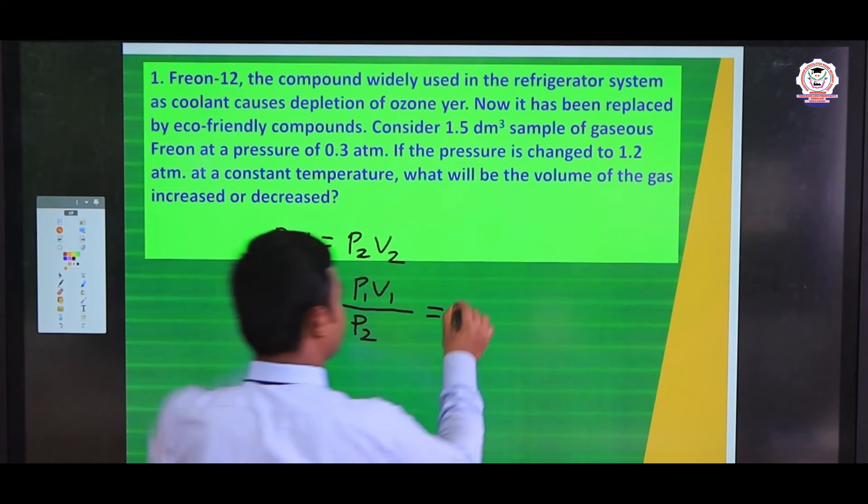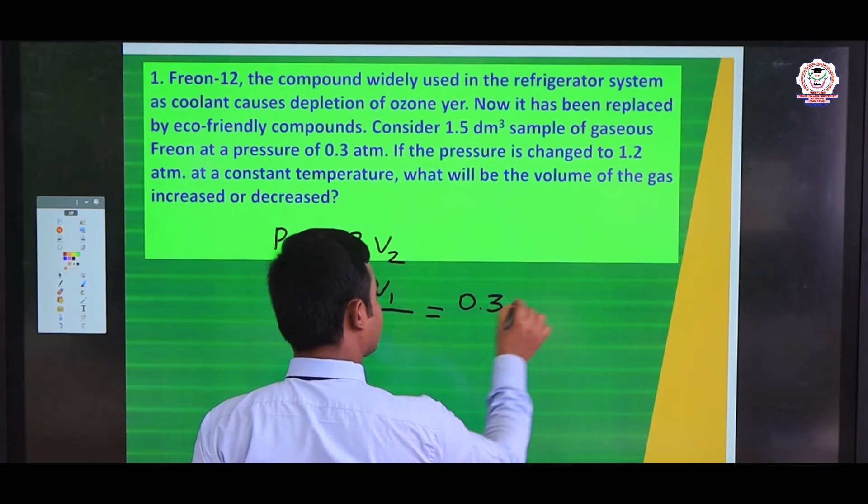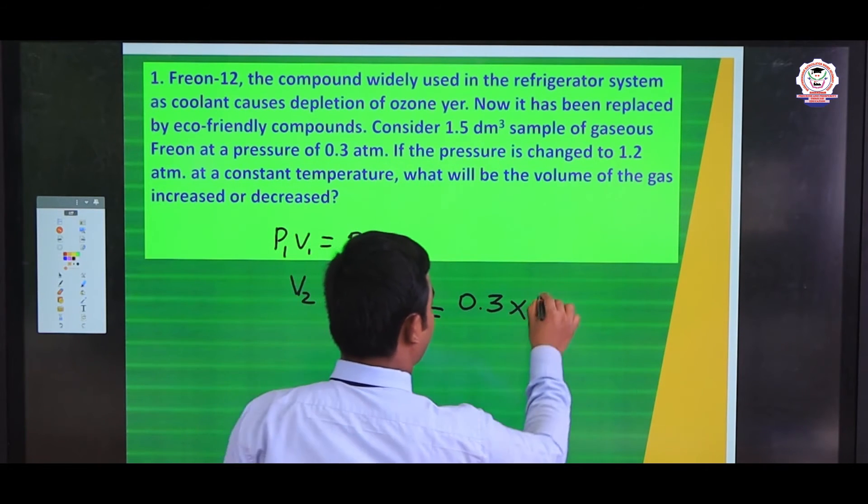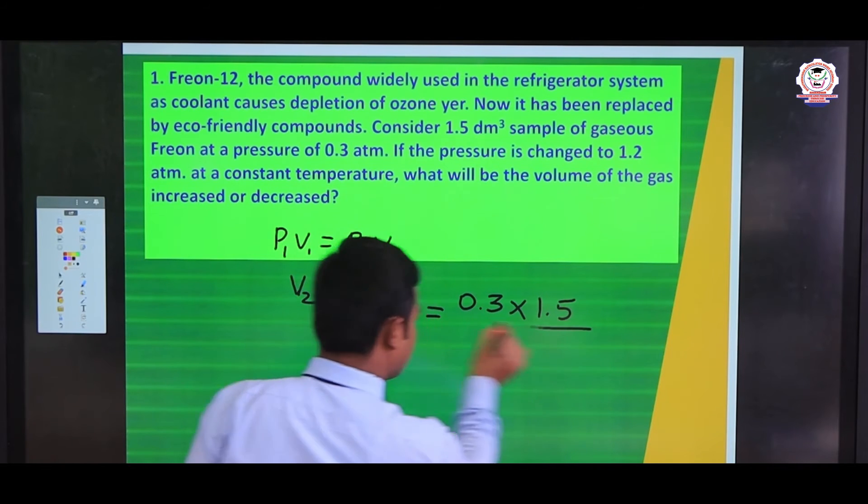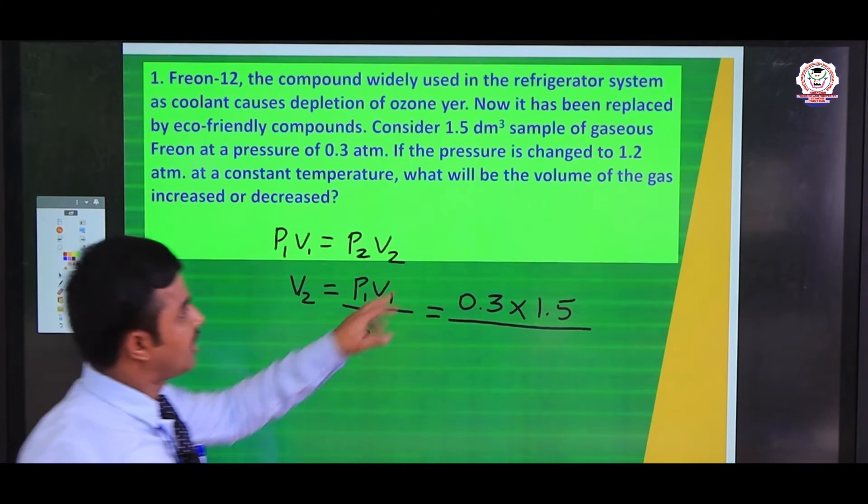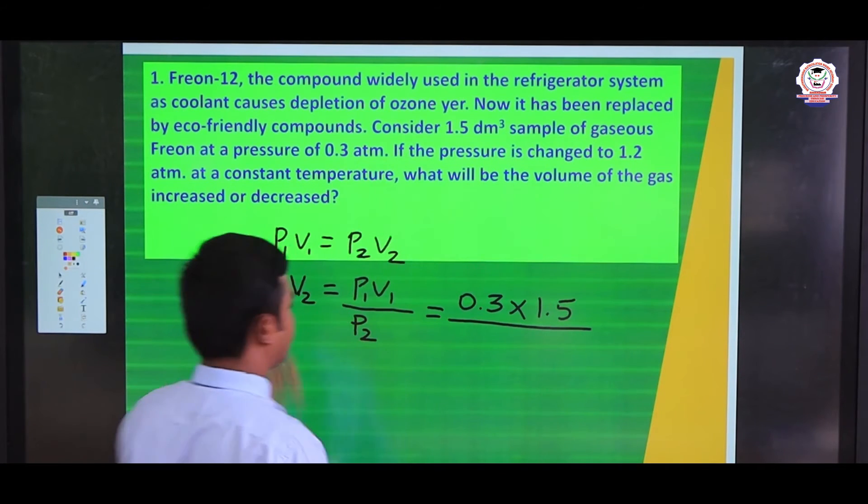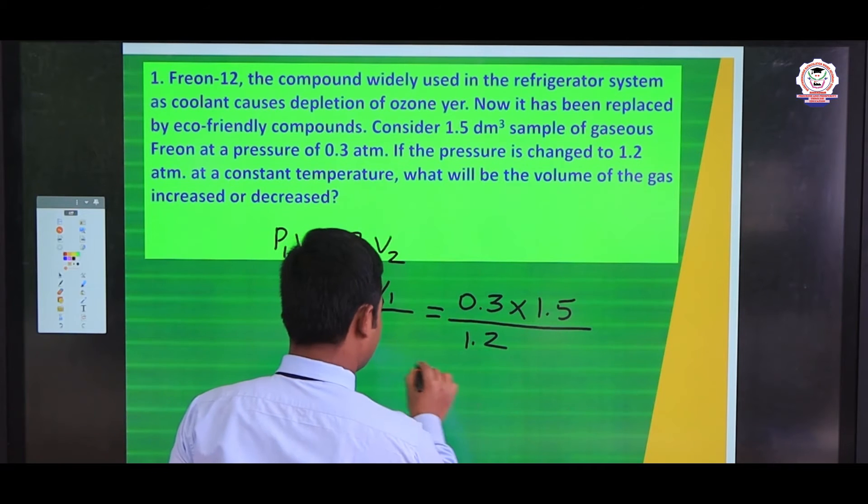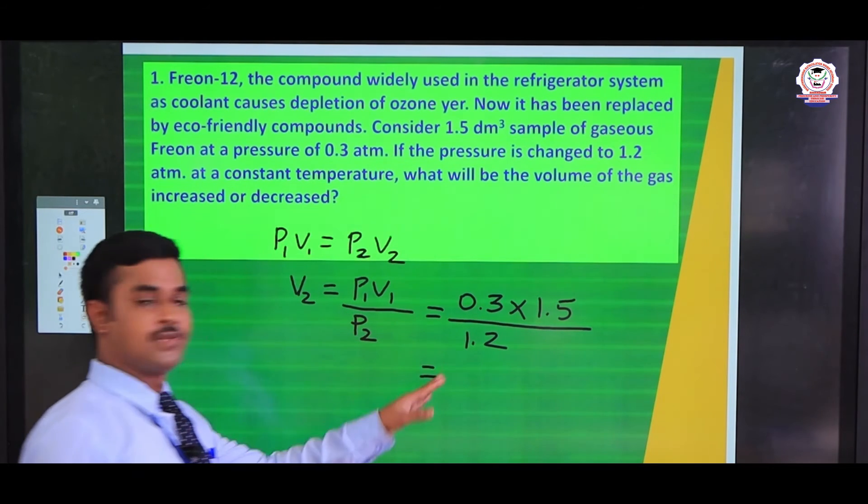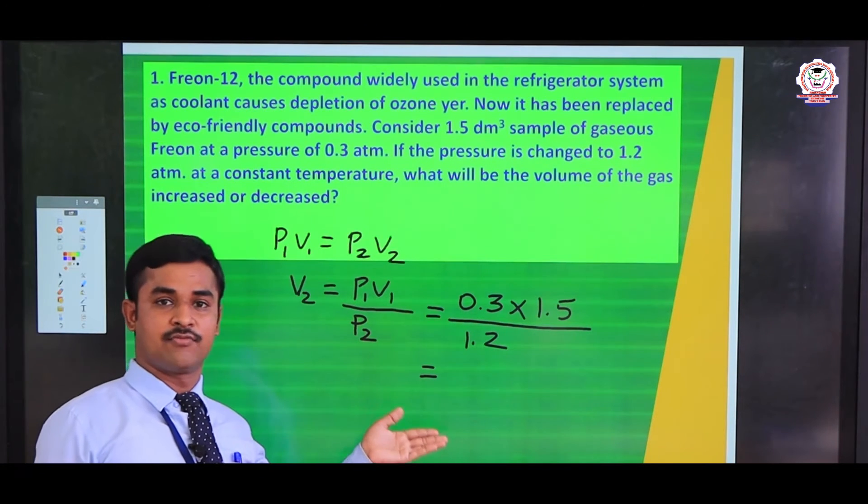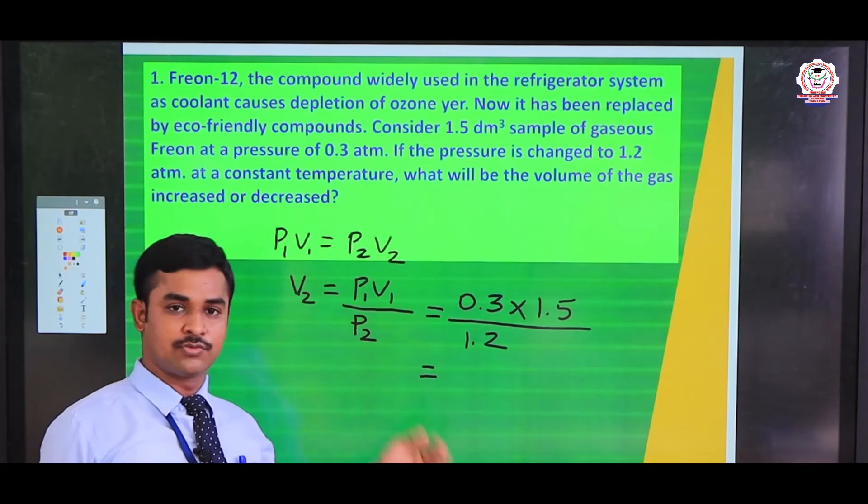Let us see what is the P₁ value: 0.3, and the V₁ value: 1.5, and P₂ value is changed to 1.2 atmosphere. So let us see the V₂ value. After we are calculating this, we can write the volume, second volume, the changed volume.